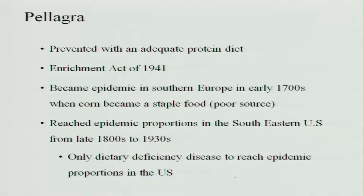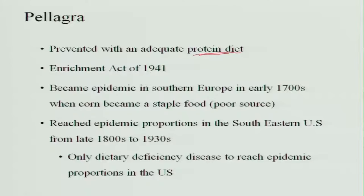Pellagra can be prevented by adequate protein intake, because tryptophan — an essential amino acid from protein — is converted to niacin: every 60 mg of tryptophan yields 1 mg of niacin. The Enrichment Act of 1941 recommended good protein diets. Pellagra had reached epidemic proportions in the southeastern US from the 1800s to 1930s, and was found to decrease when protein-rich diets were given.